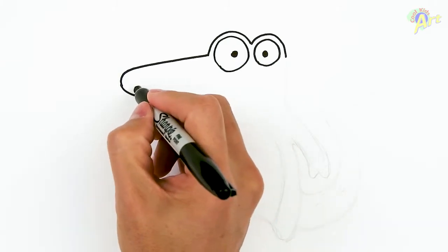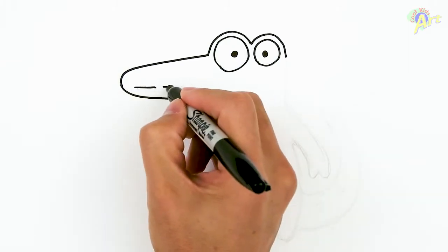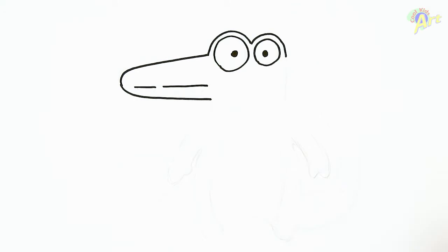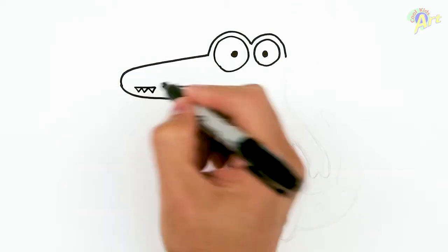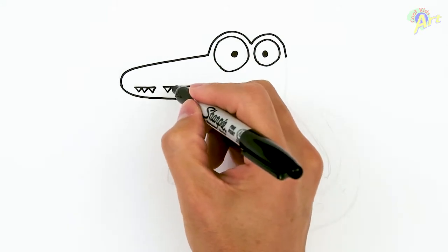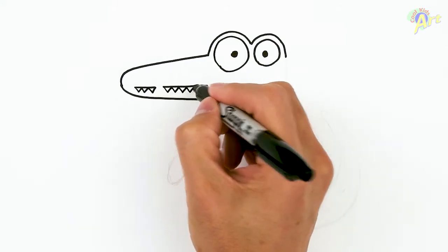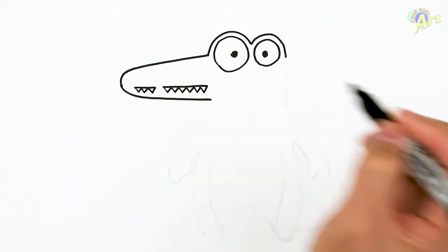Now we're going to draw a row of teeth right here. So we're going to draw two lines. One, two. Okay, and then we're going to give it some zigzags. We're going to do three there and just keep going until you get all the way to the end of the line.